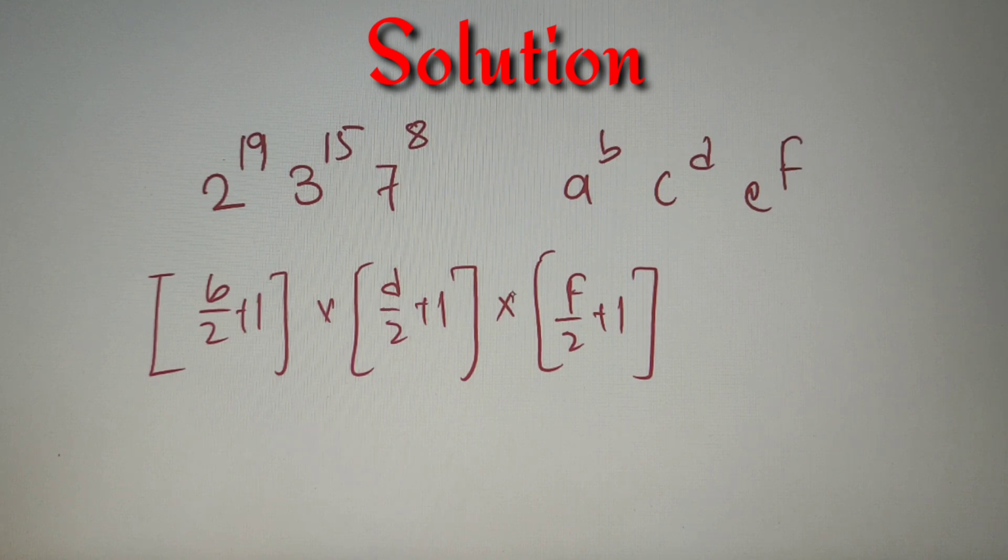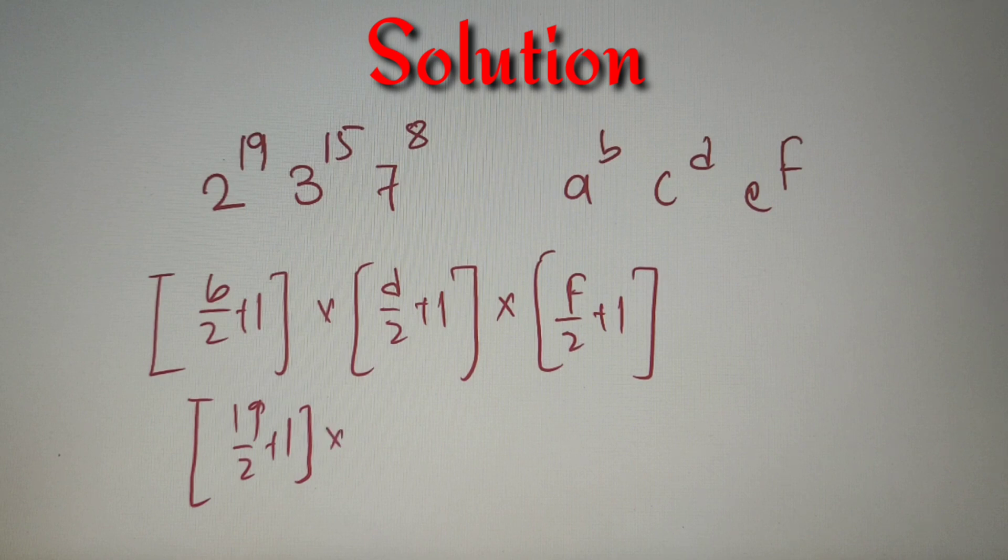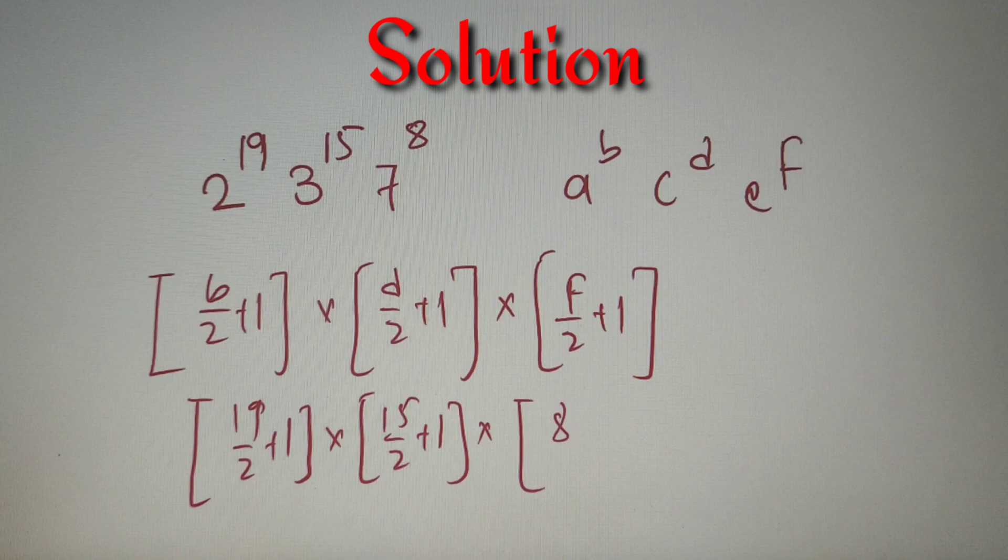We just have to put the numbers in the respective places and we'll get our answer. So putting the numbers we'll get 19 by 2 plus 1 in the greatest integer function into 15 by 2 plus 1 in the greatest integer function, and lastly we'll get 8 by 2 plus 1 in the greatest integer function.